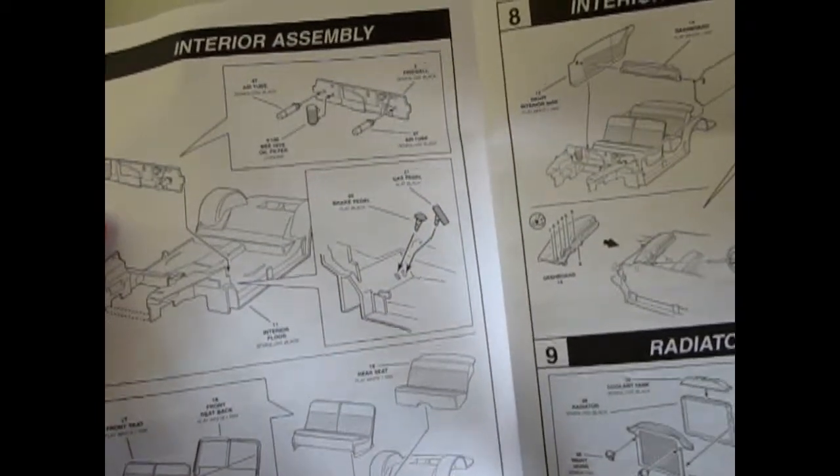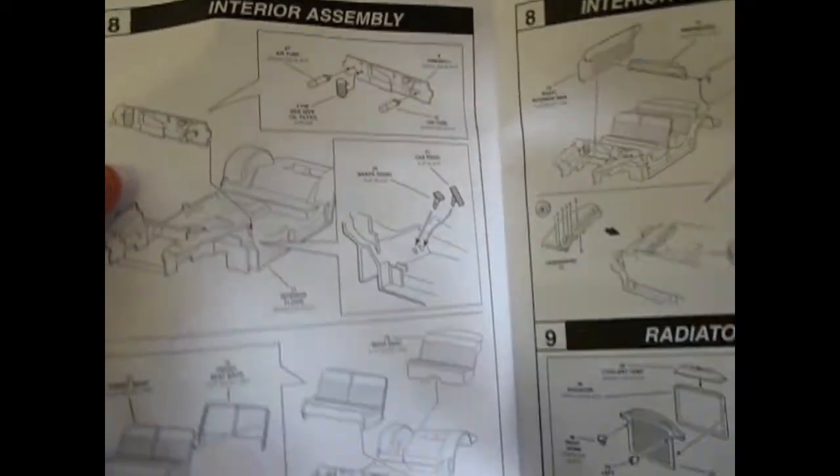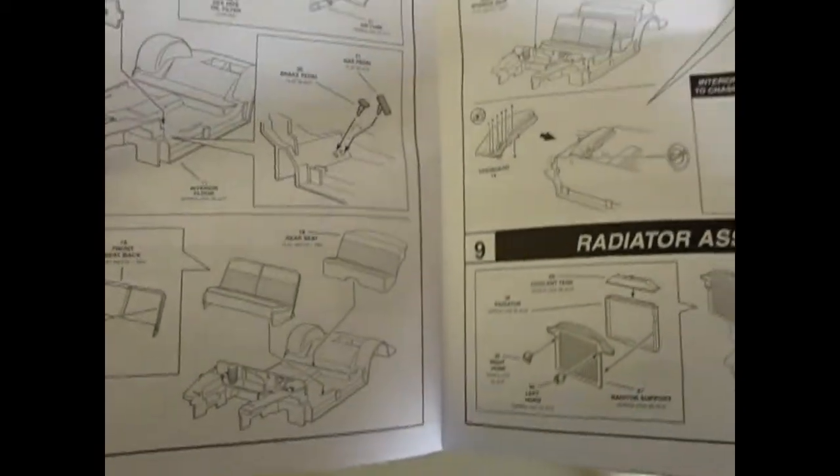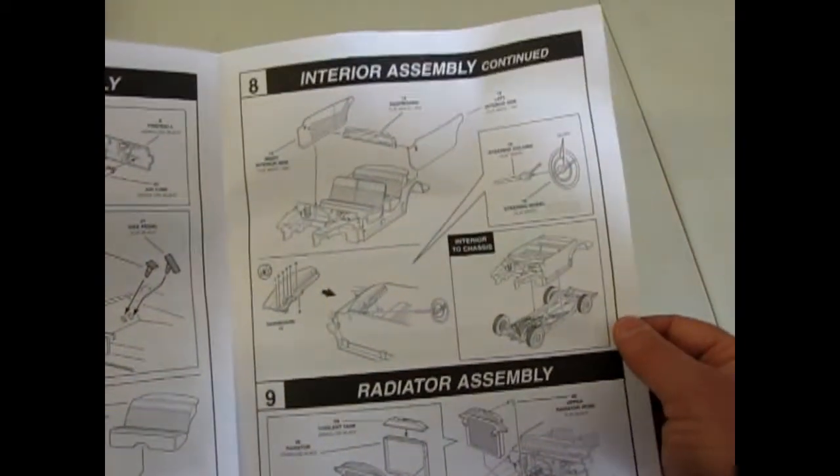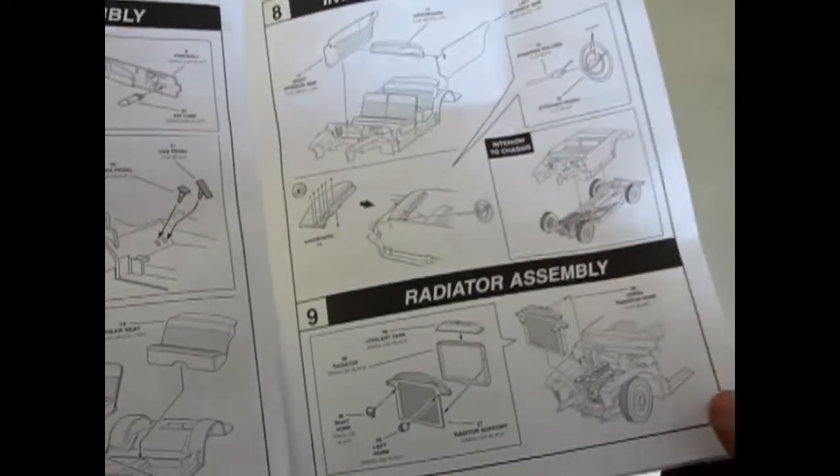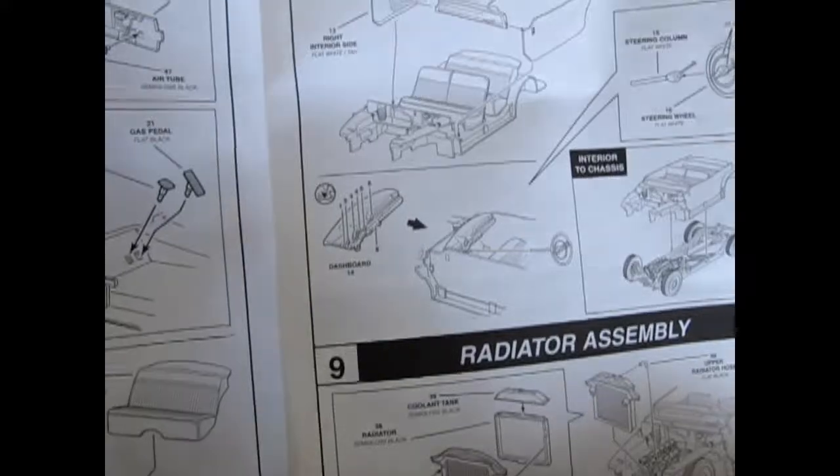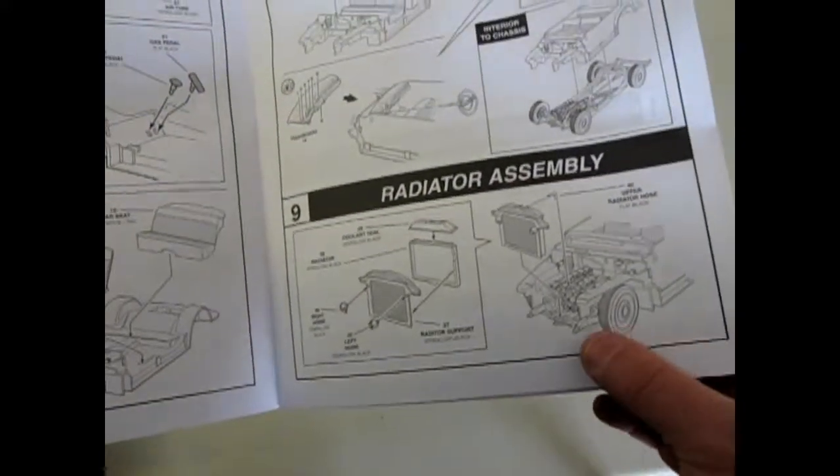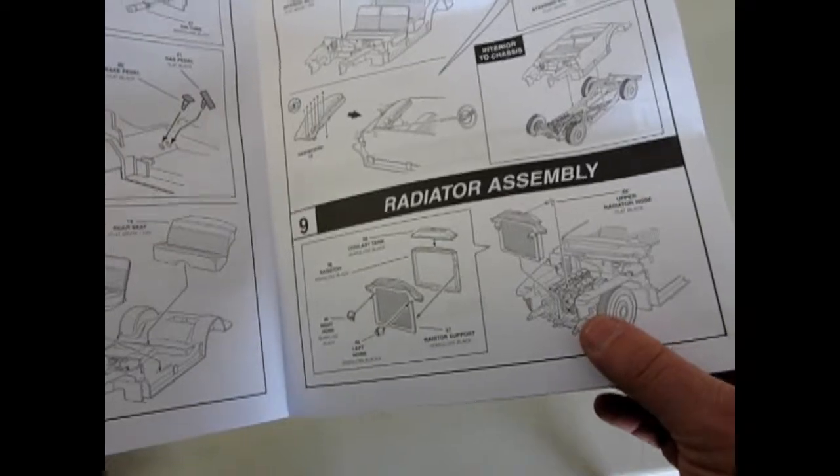And of course, our interior with that Beehive oil filter, which is always cool. And we've got the bench seats, a very nice upholstery pattern inside. Steering wheel, dashboard with what looks like decals for instrument panels, and a radiator.